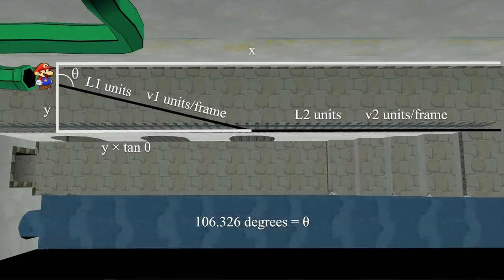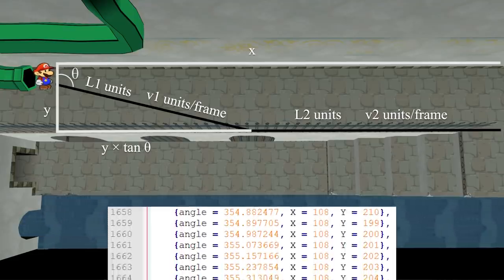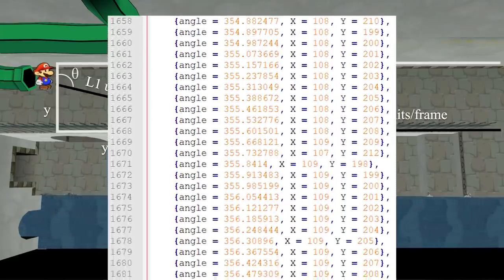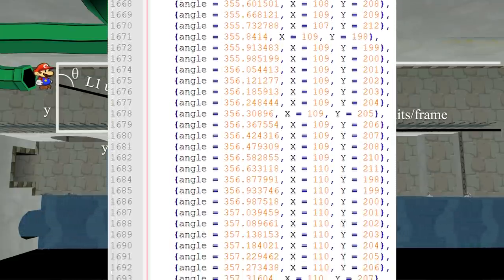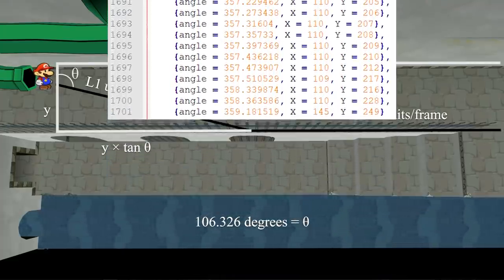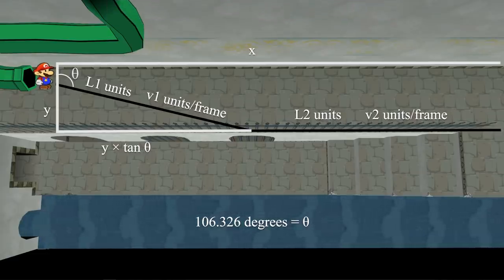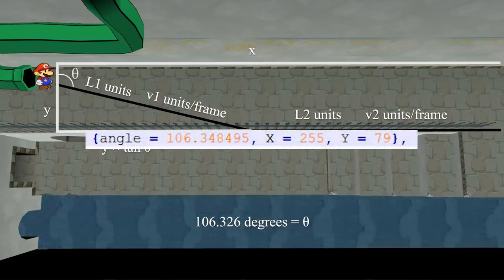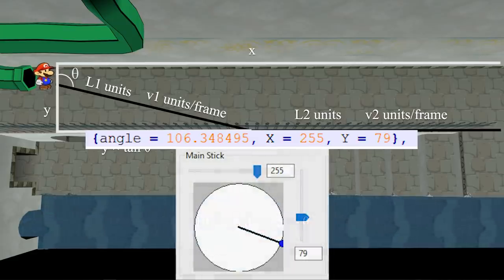The last step is converting this into an actual GameCube controller analog stick input. A while ago, I made a script that brute forced all 65,536 theoretical GameCube controller analog stick inputs, which resulted in a list of 1700 distinct angles in TTYD. From this list, we can find the angle closest to 106.326. The closest angle is 106.348495 with corresponding analog stick input 255,79, which looks like this.